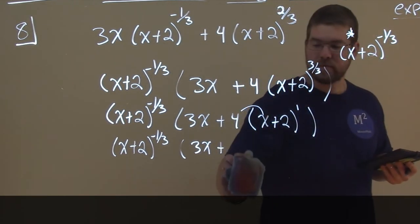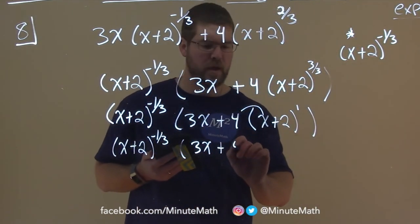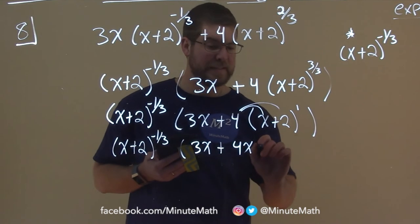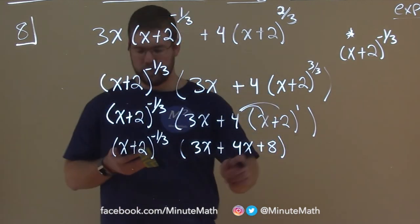Almost made a mistake there. That's all good. We all make mistakes. 4x here, and 4 times 2 is 8. So now we have 3x plus 4x plus 8 here.